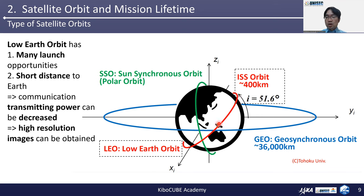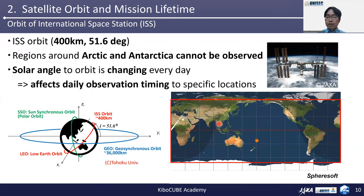This short distance to Earth has some merits. Communication transmitting power can be decreased, and high resolution images can be obtained by a small telescope or camera. Satellites released from the International Space Station have a 400-kilometer height and inclination of 51 degrees. This inclination is the angle from the equatorial plane to the satellite orbit plane. Regions around the Arctic and Antarctica cannot be observed from this ISS orbit.